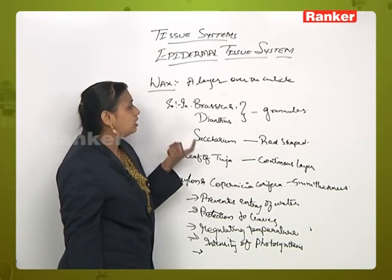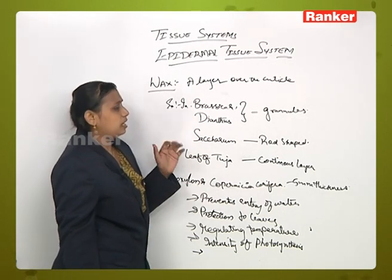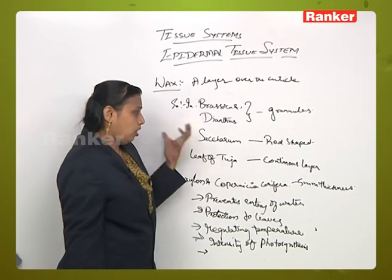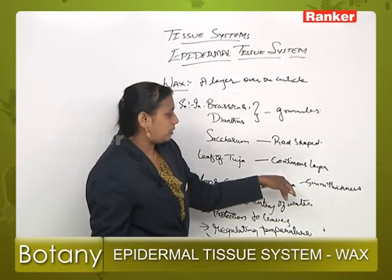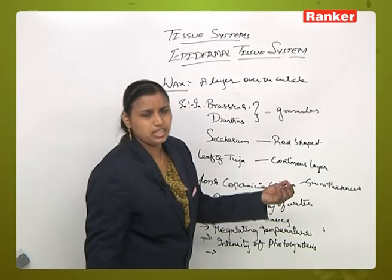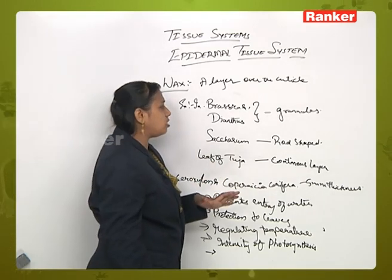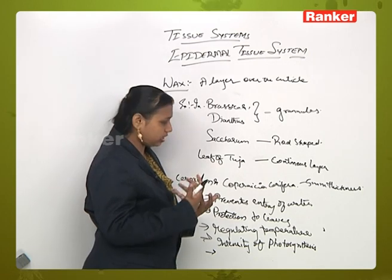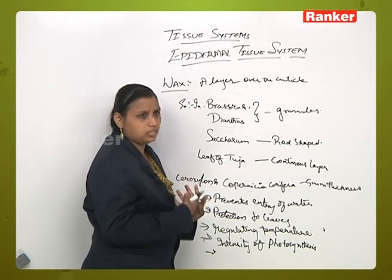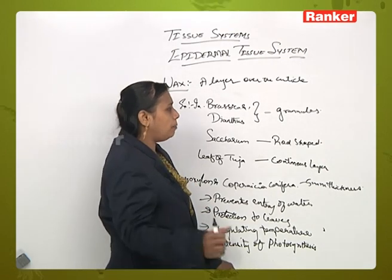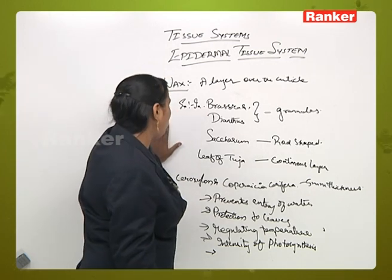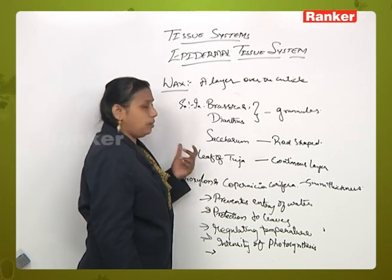The wax layer is the outermost layer, covering over the cuticle. It may occur in various forms in various plants: in the form of small granules in brassica and dianthus, in the form of rod shape in saccharum, and in the form of a continuous layer in the leaves of tuja. In ceroxylon and copernicea cerifera, the thickness of the wax layer is 5 millimeters. Its main functions are: preventing excess entry of water inside the body, providing protection to leaves and fruits, regulating temperature, and controlling the intensity of photosynthesis by reflecting light and protecting from excess sunlight. These are the functions of wax present in the epidermal tissue system.